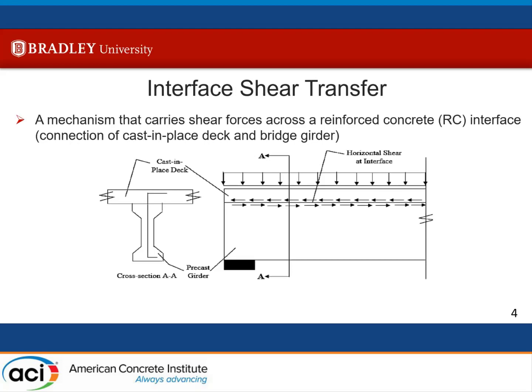To explain the interface shear transfer, it is a mechanism that carries the shear forces across a reinforced concrete interface. For example, the cast-in-place deck and bridge girder is perhaps the most important example, where the bottom layer of the deck and the girder tend to want to slide off each other horizontally when load is applied, which causes horizontal forces along that interface. Interface shear technically happens where there is zero moment and a shear force along the interface.